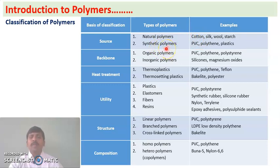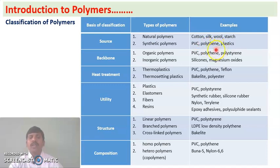Synthetic polymers are artificial or man-made polymers. Examples are polyvinyl chloride — we manufacture PVC pipes, which are synthetic polymers. Similarly, polythene bags are synthetic polymers. Plastics used in daily life as different plastic goods are also synthetic polymers.